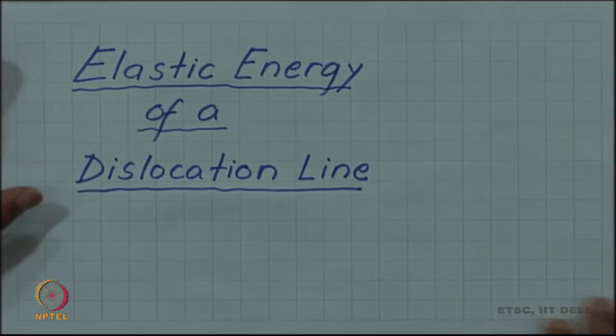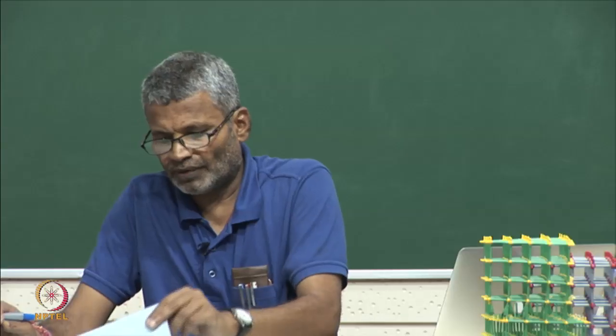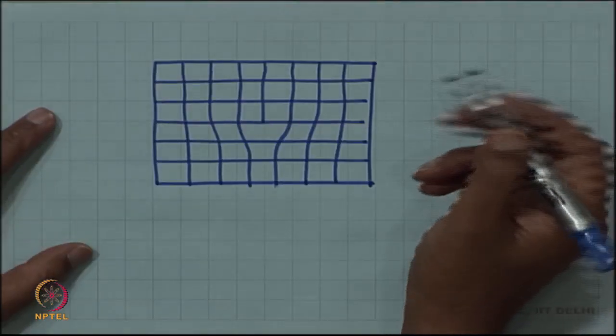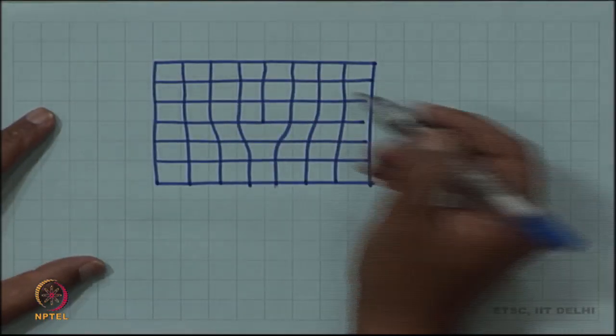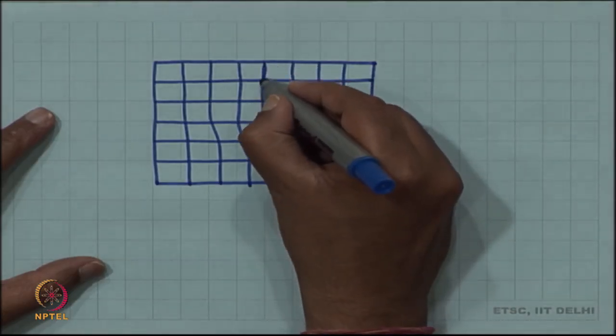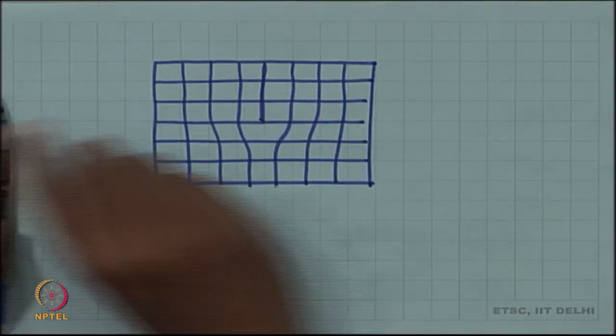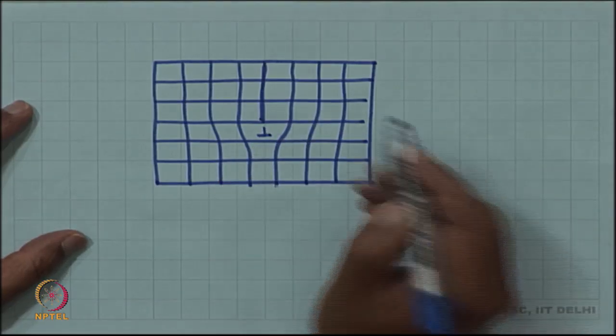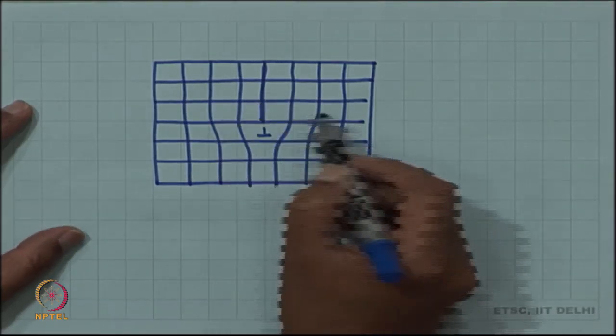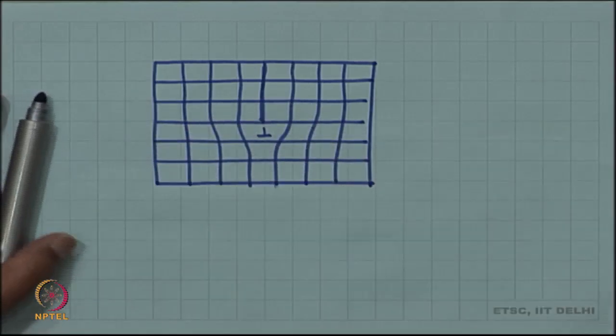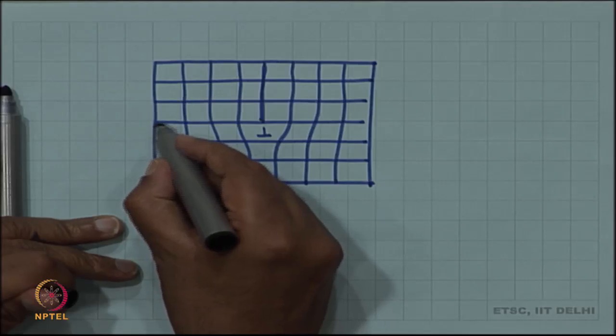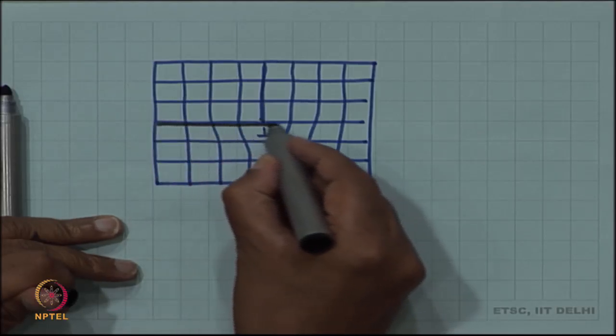Let us look at elastic energy of a dislocation line when we have a dislocation. Here we are showing the edge dislocation diagram again, this is the extra half plane. There is a dislocation line here. Because there is an extra half plane above this, and this is the slip plane.